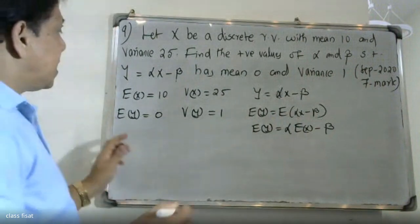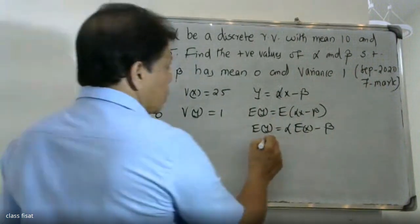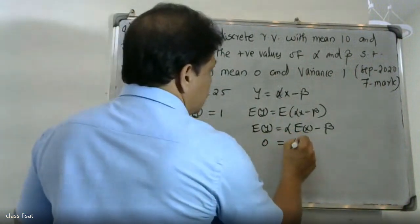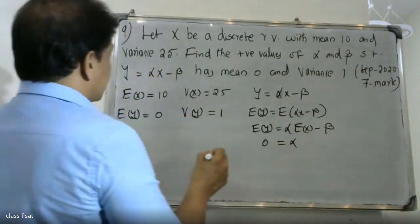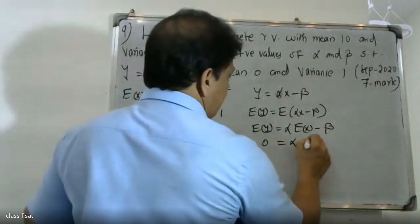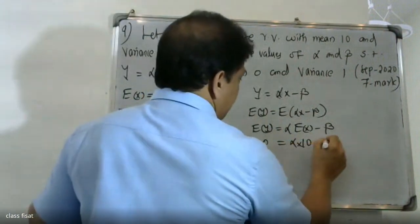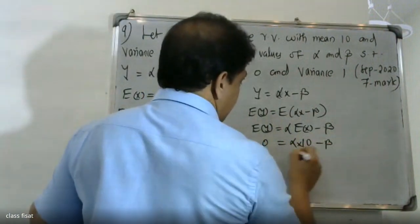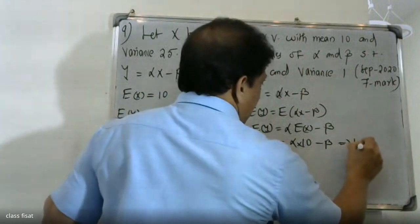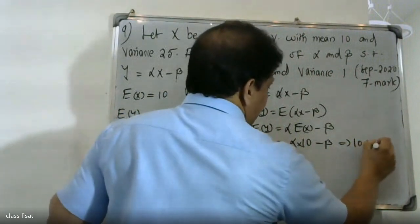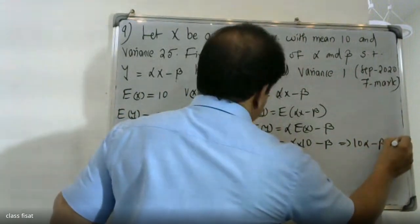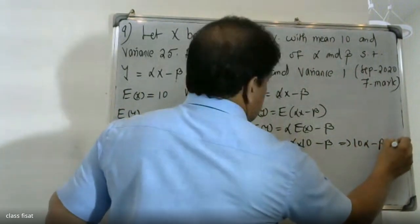Expectation of Y is equal to 0. Alpha into expectation of X is 10, so we get alpha into 10 minus beta equals 0. Therefore, 10 alpha minus beta is equal to 0.